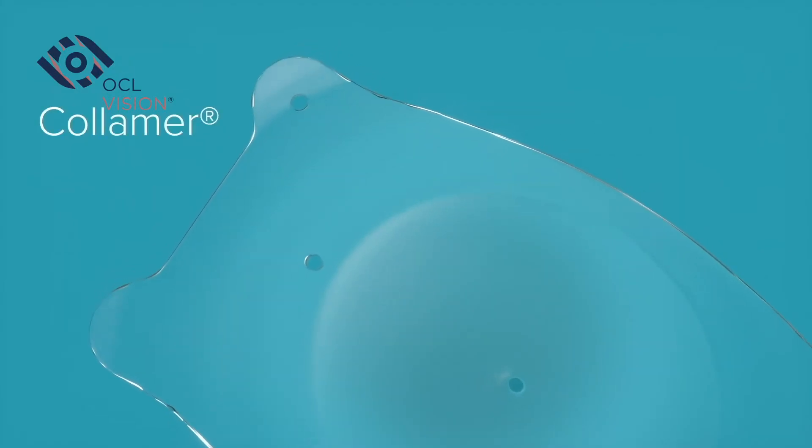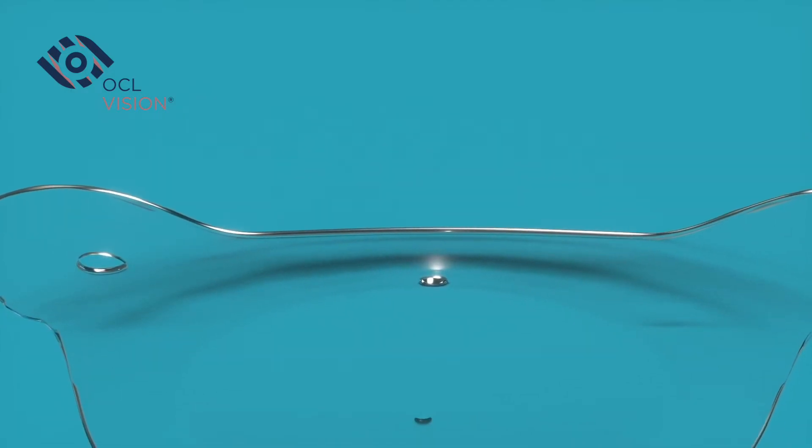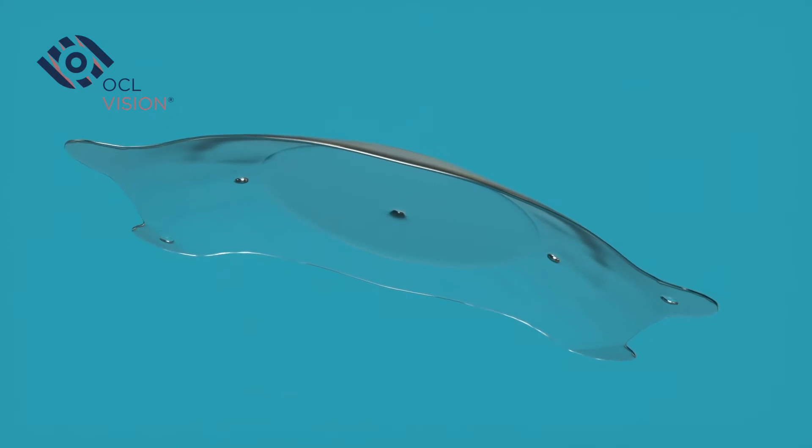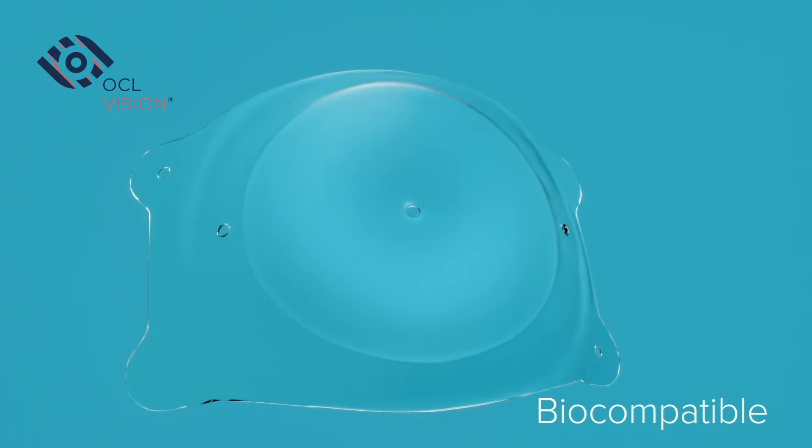EvoVision ICL's columer material contains a small amount of purified collagen, and the remainder is made of a similar material to that found in soft contact lenses. Columer makes the EvoVision ICL lens soft, flexible, and biocompatible, which means the lens is stable inside the eye.